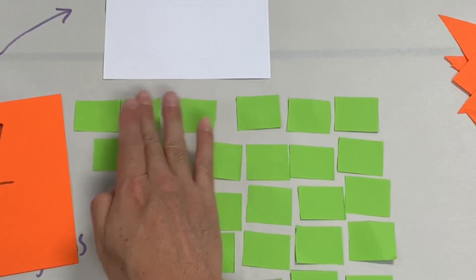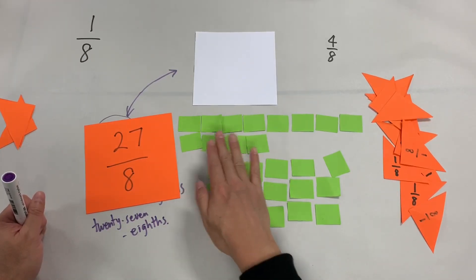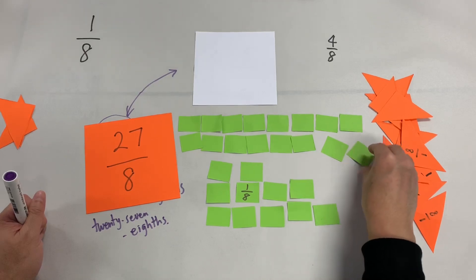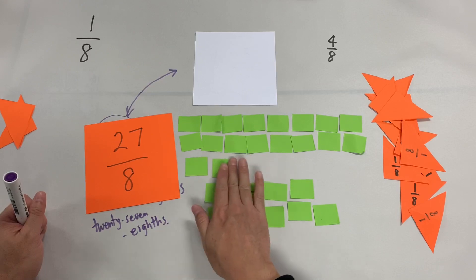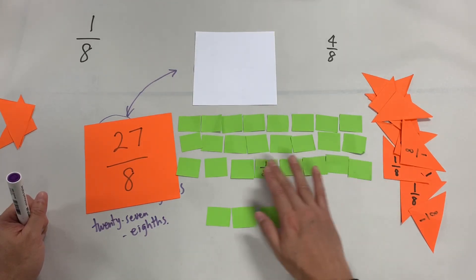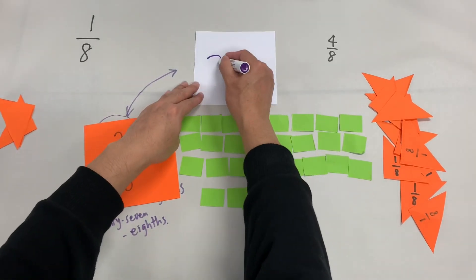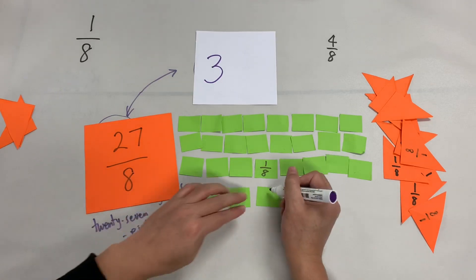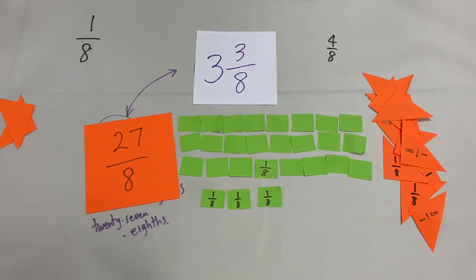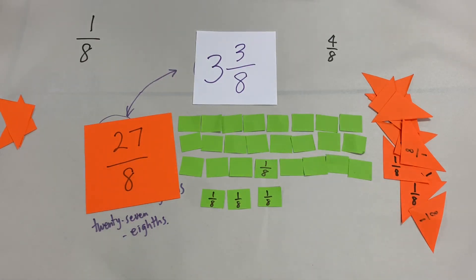So I wonder how many whole cakes I can make. I can make one whole cake — one, two, three, four, five, six, seven, eight, that's one whole cake. Then one, two, three, four, five, six, seven, eight — that's another whole cake. Then one, two, three, four, five, six, seven, eight — I have three whole cakes, and three eighths left. So twenty-seven eighths is three and three eighths. See if you can make four cakes by yourself with your little pieces. That was part two.